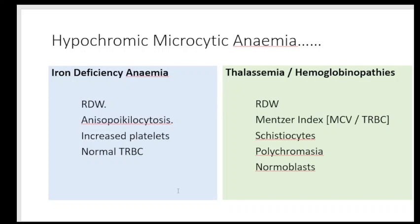On the other hand, a normal red cell distribution width, presence of fragmented cells or schistocytes, presence of polychromasia (increased immature RBCs), presence of normoblasts (nucleated RBCs), and the Menzier's Index — defined as mean corpuscular volume divided by total RBC count — all point toward thalassemia. A Menzier's Index less than 13 suggests thalassemia. So when looking at a CBC, look for RDW, total RBC count, platelet count, fragmented RBCs, and normoblasts.